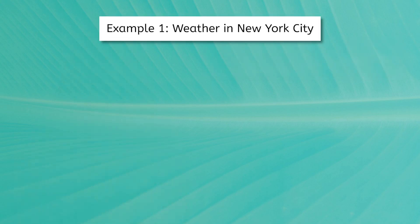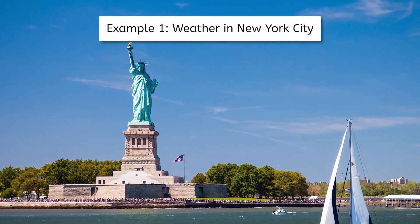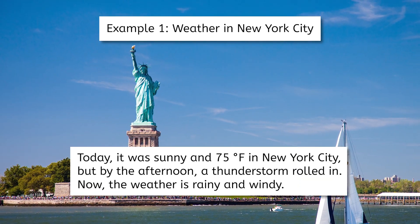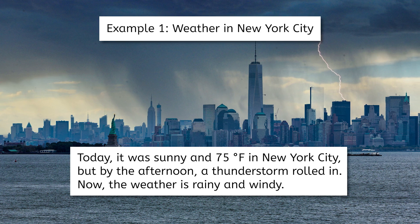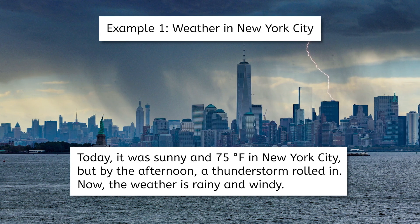Let's see if we can use examples of weather and climate to determine the difference between the two. Let's look at an example of weather first. We'll use New York City as our location. Today, it was sunny and 75 degrees Fahrenheit in New York City, but by the afternoon, a thunderstorm rolled in. Now, the weather is rainy and windy.